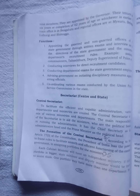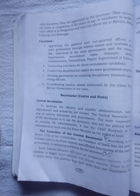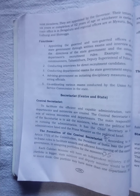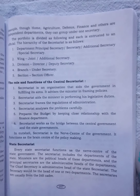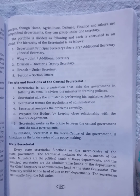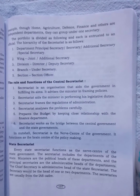State ministers and deputy ministers will be there to help them. One portfolio may have more than one department — for example, home or agriculture. Defense and finance and others are independent departments. They can be grouped under one secretariat. The portfolio is divided and each is entrusted to an official according to the hierarchy of the secretariat.